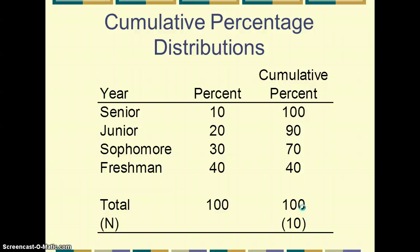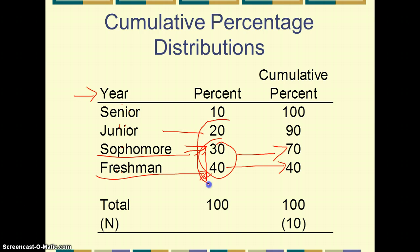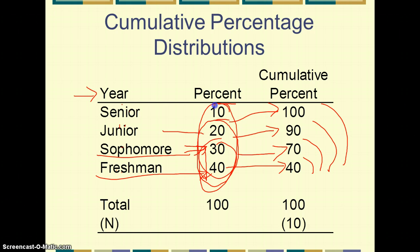Here's an example: with the variable year — freshman, sophomore, junior, senior — freshmen are 40%, and the cumulative percentage at freshman level is 40. Sophomores are 30%, so 30 plus 40 gives a cumulative of 70. Juniors are 20%, so 20 plus 70 gives 90. When you add in seniors, you reach 100%. You're simply accumulating at each level, so 100 represents all levels, 90 represents through junior, 70 through sophomore, and 40 just freshman.